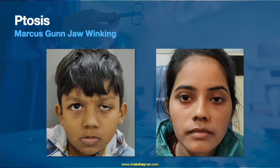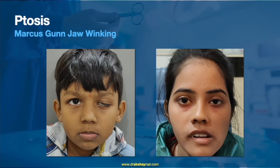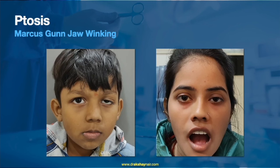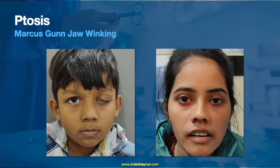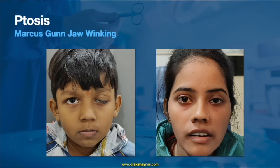Marcus Gunn jaw-winking phenomenon is typically seen in certain cases of congenital ptosis associated with synkinesis. Moving the jaw muscles, swallowing, or chewing causes the upper eyelid to flutter. This can be induced in pre-verbal children by giving them a piece of chocolate or candy to eat.